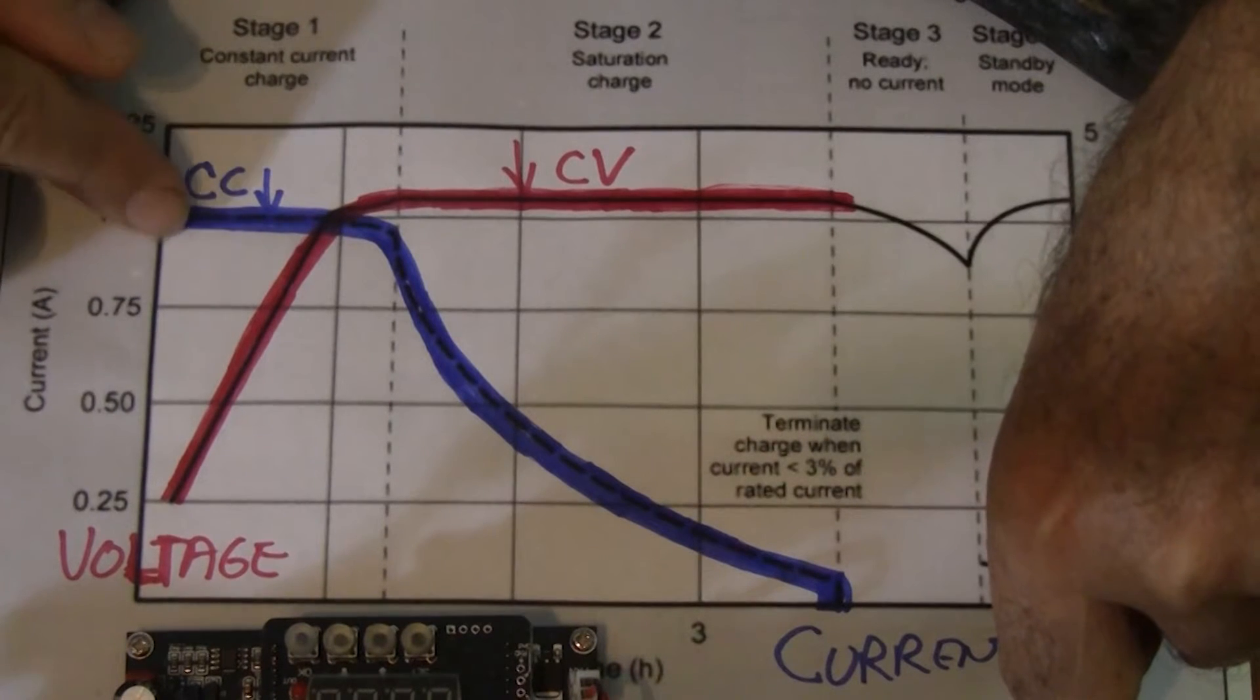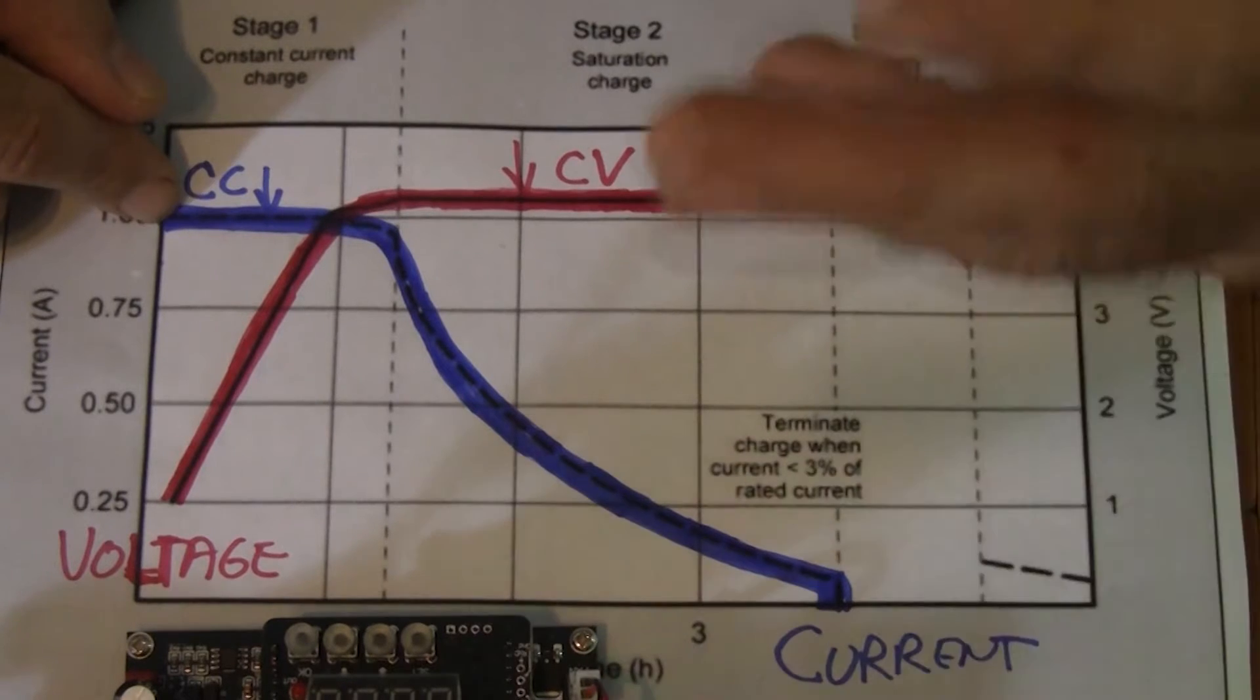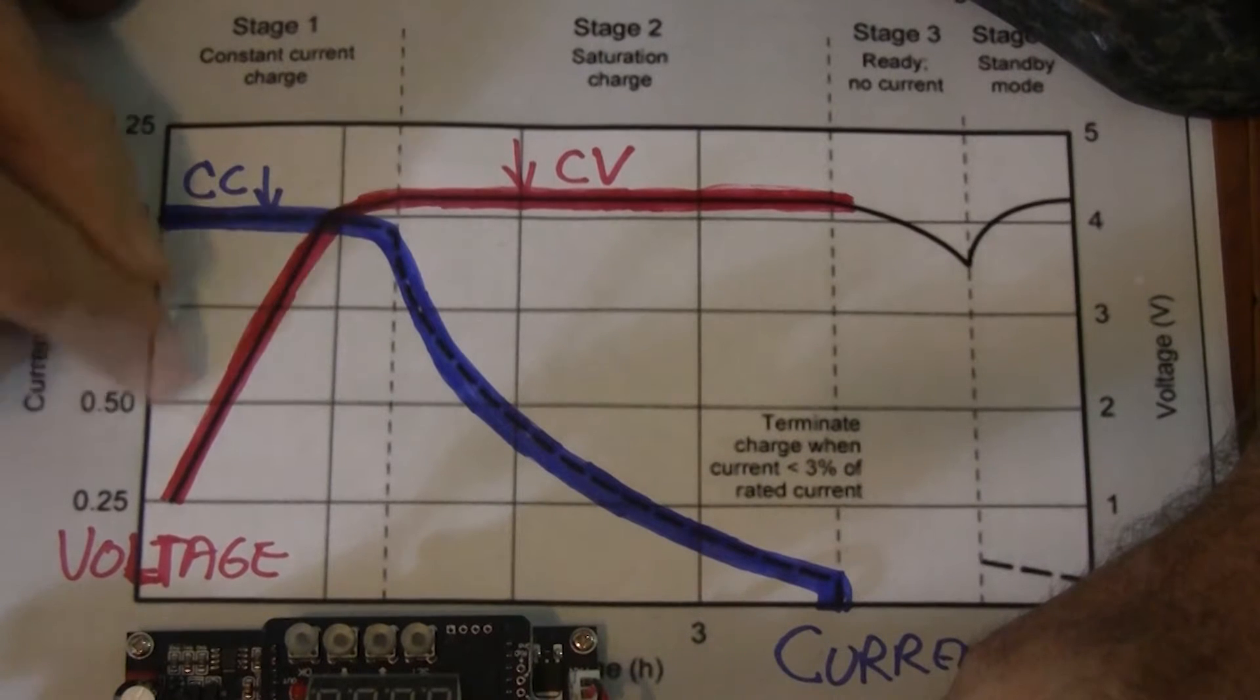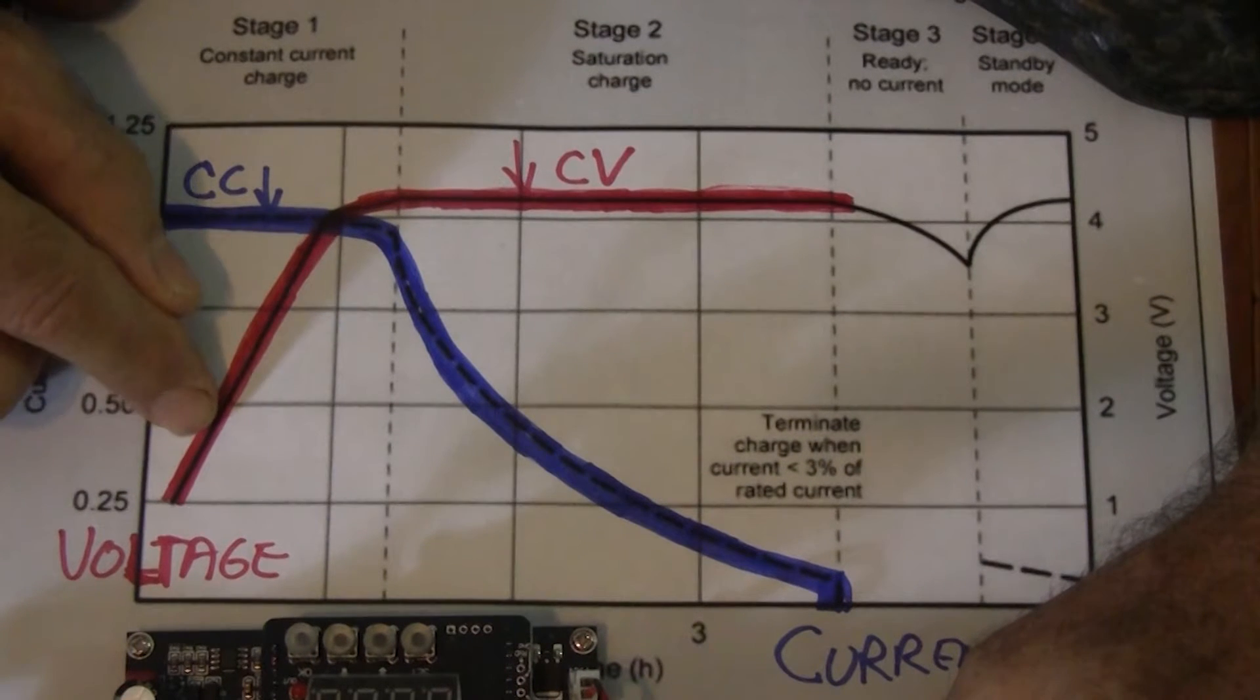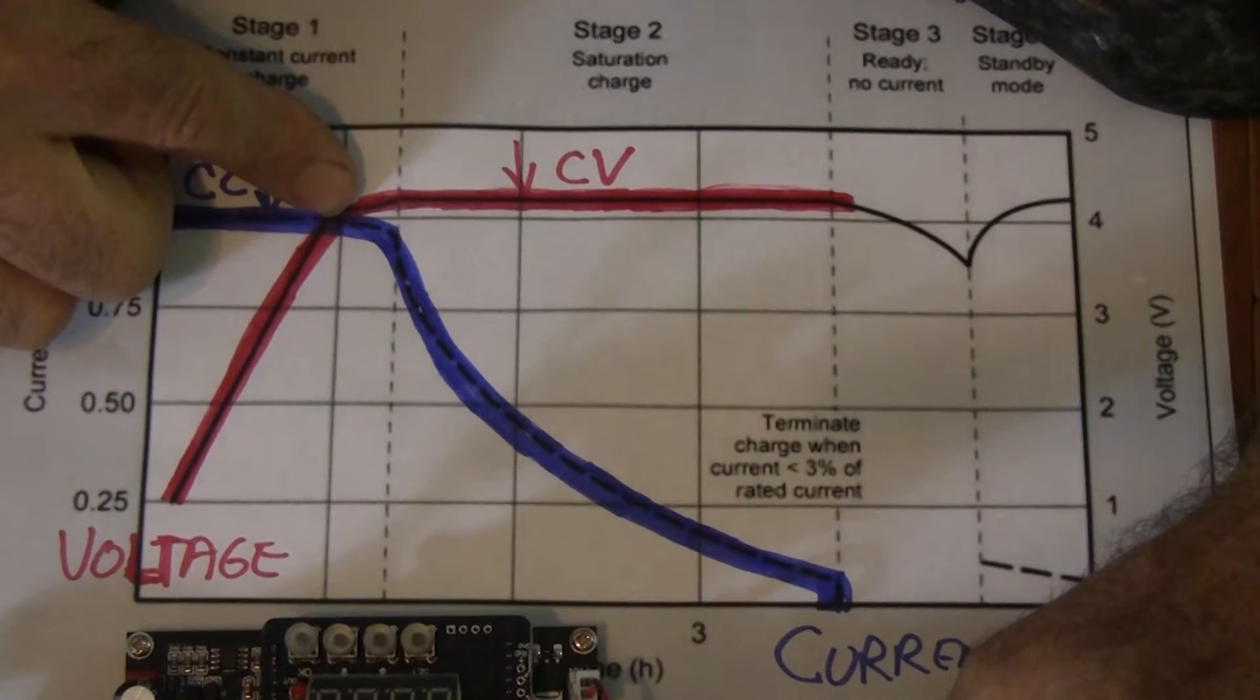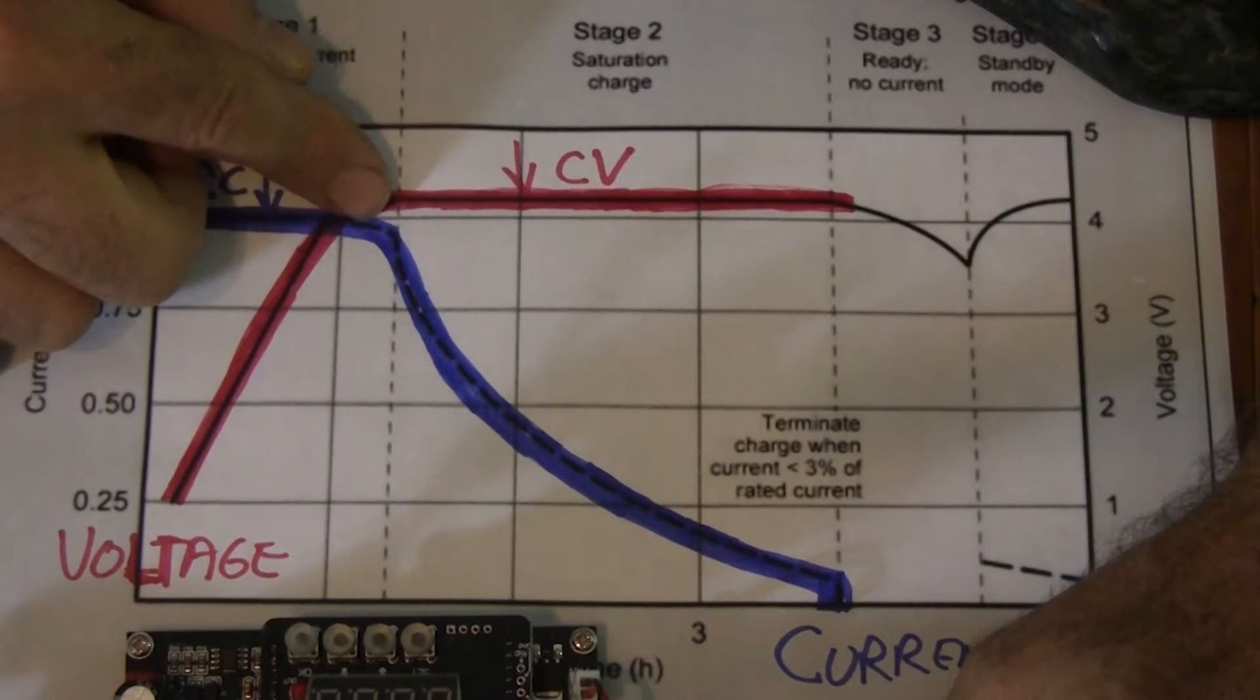So when your charger first starts charging, it puts out a constant current. Essentially, it puts out as much power as it's got. If it's a 100 watt charger, it's putting out 100 watts, 300 watts of power. Because the voltage is down here, the voltage is low. But as it keeps putting in current and time goes by, the voltage increases until finally they intercept. And what this means is that your battery is now at its fully charged voltage.